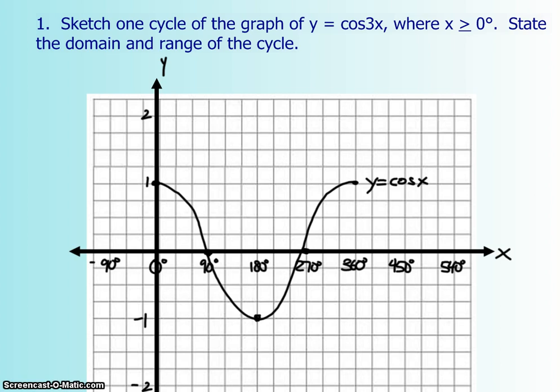Now the 3, we know, is our k value, which means it's a horizontal compression by a factor of a third. And if we wanted to take a look at the period, a normal period for cos is 360 degrees, but it's going to be divided by your k value, which is 3. So you're expecting that you will go from 0 to 120 instead of all the way up to 360. So technically, your graph should end right about here, because each of my blocks is worth 30 degrees.